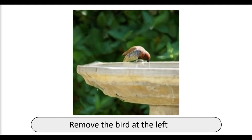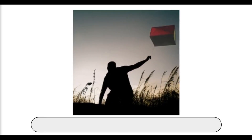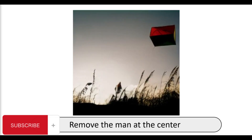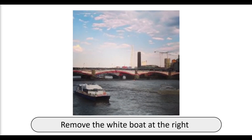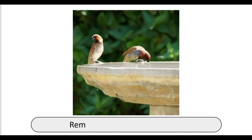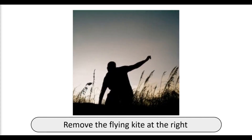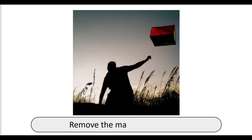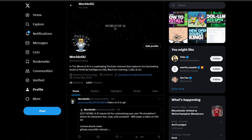From earlier applications, users needed to manually generate the mask for an object before removing it, which is very time-consuming and prone to errors. Researchers of the Inst-Inpaint project have created a way to remove objects from images based on text prompt instructions. This is done by constructing a new dataset called GQA-Inpaint, which we'll cover throughout the video, along with how you can use Inst-Inpaint with diffusion models and how to install it.